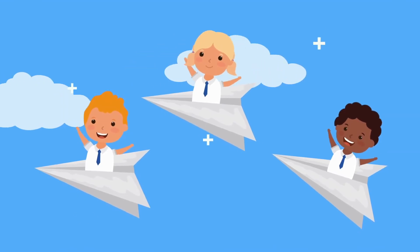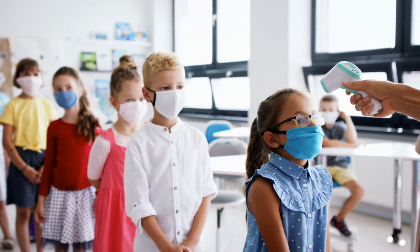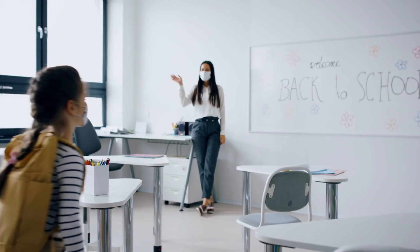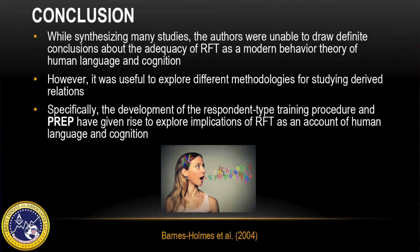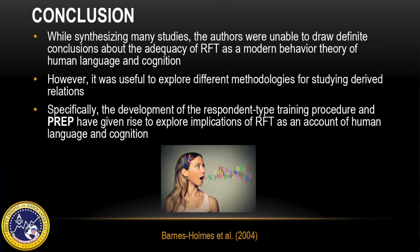The critical point is that the lack of relational specificity inherent in words and terms such as 'yes' and 'goes with' may provide reliable control over symmetry or mutual entailment, but not over combinatorial entailment. Based on the PREP study and RFT, it has been noted that contextual cues for equivalence responding are present in MTS. This may include education or a learning history for discrimination and matching. RFT thus predicts that a history of match-to-sample training and testing may provide a context for equivalence relations — in other words, using the contextual cues 'same' and 'different' should increase the likelihood of equivalence responding. The authors of this article synthesized many studies but were unable to draw definitive conclusions about the adequacy of RFT as the modern behavior theory of human language and cognition. The authors pulled bits and pieces from each theory, concept, property, and principle, and demonstrated the value of exploring different methodologies in studying derived relations.